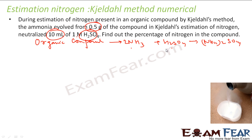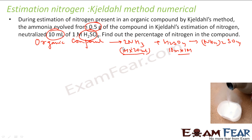I had 10 mL of 1M H₂SO₄, so I need twice that amount of ammonia — that is 20 mL of 1M ammonia to neutralize 10 mL of 1M sulfuric acid. So 20 mL of 1M ammonia was evolved in this reaction.